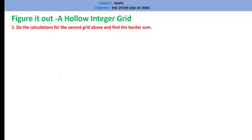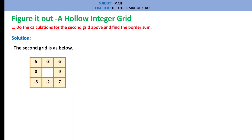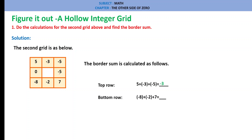Figure it out — Question 1: Do the calculations for the second grid above and find the border sum solution. The second grid is: 5, minus 3, 5, 0, minus 5, minus 8, minus 2, 7. Top row: 5, minus 3, minus 5 = minus 3. Bottom row: minus 8, minus 2, plus 7 = minus 3. Left column: 5, 0, minus 8 = minus 3. Right column: 5, minus 5, plus 7 = minus 3.